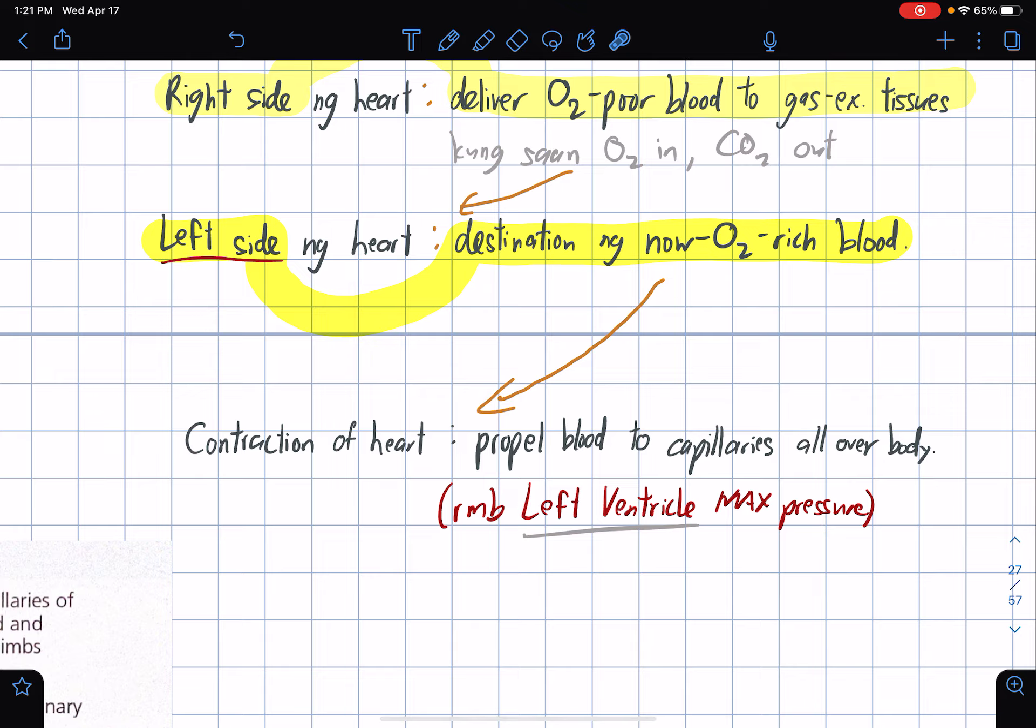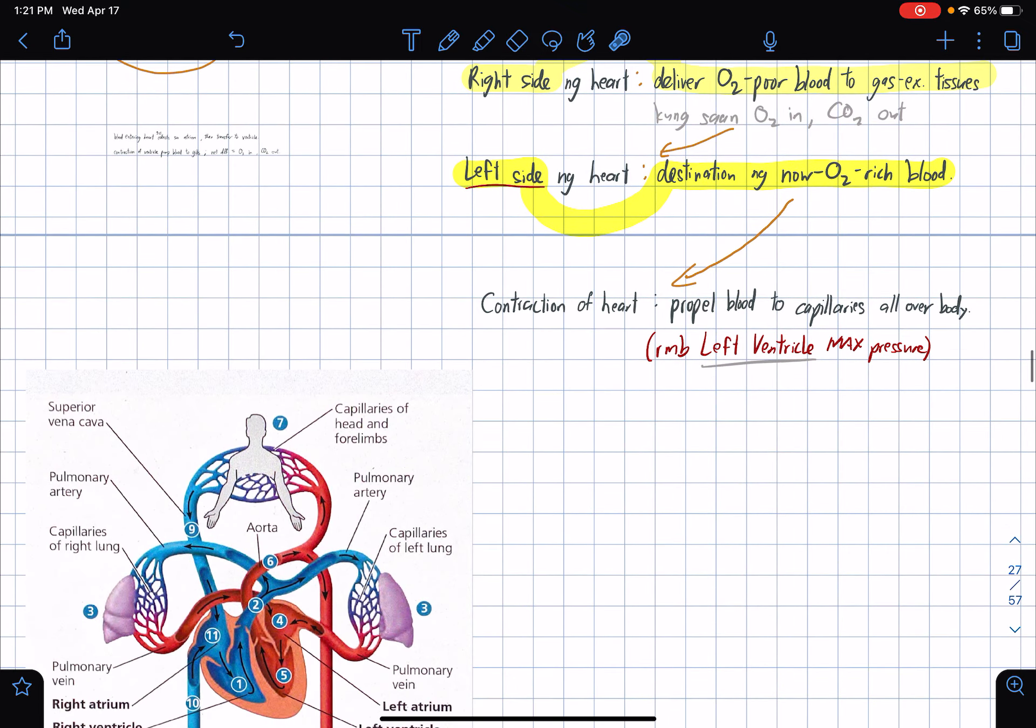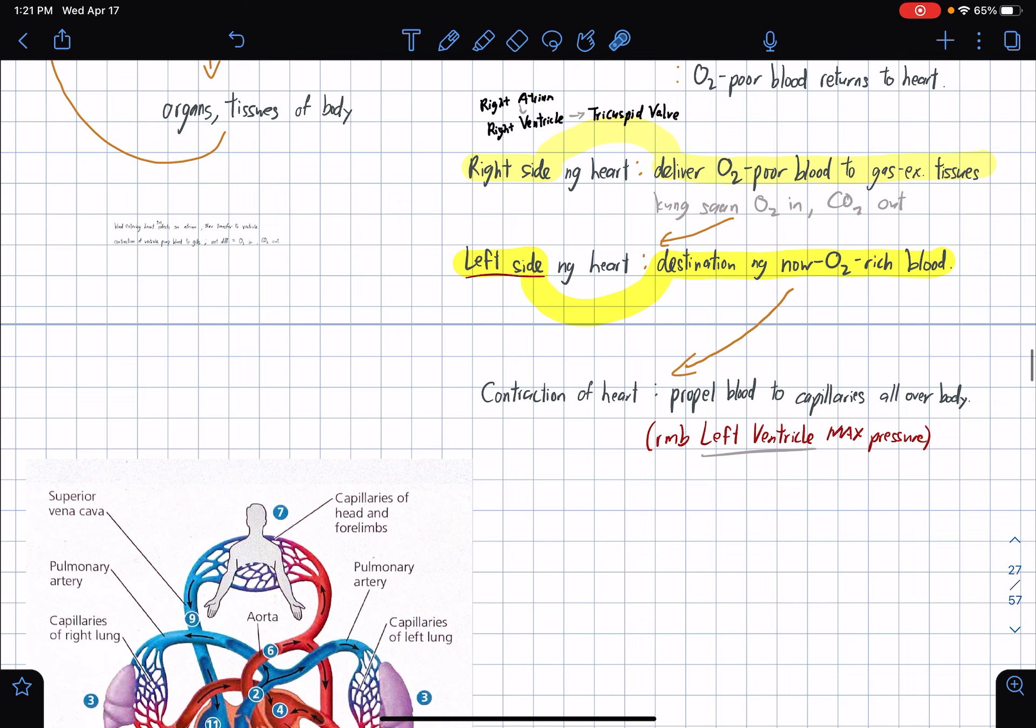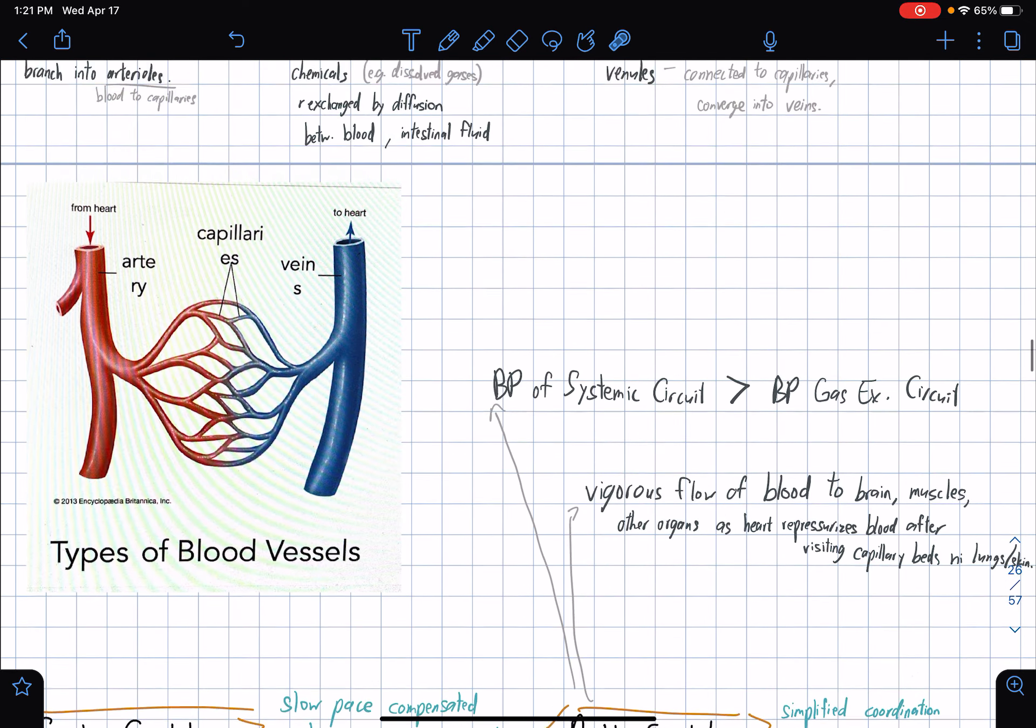Contraction of the heart propels blood to capillaries all over the body. Remember that the left ventricle holds the maximum pressure, the highest pressure, since it's responsible for delivering blood to the rest of the body.